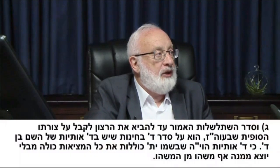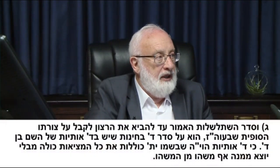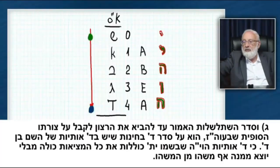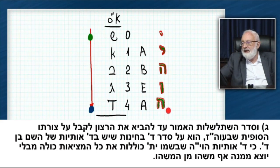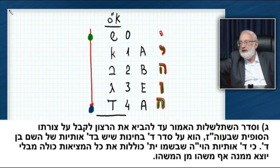The above-mentioned order of cascading, which brings the will to receive to its final form in this world. Meaning, why all this cascading? This whole development from Ensof down to this world. In order to reach a will to receive here below, which is us.